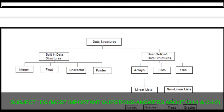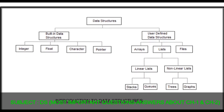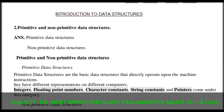The classification of data structure: data structures are classified into two types — built-in data structures and user-defined data structures. Built-in data structures contain primitive data types such as integer, float, character, and pointer. User-defined data structures contain array, list, and files. List is considered as two types: linear list and non-linear list. Linear list includes stack and queue; non-linear list includes tree and graph.